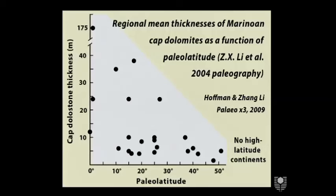The cap dolomite is the part that was actually deposited as the ice was melting — the mixed layer deposit, the shallow water deposit that tracks the sea level as it's rising and flooding the landscape. We're talking about a global sea level rise of up to a kilometer depending on how much ice is actually left at deglaciation. The cap dolomite does actually thicken as a function of paleolatitude — from Lee's paleogeography, the upper envelope of thickness increases towards the equator, as you would expect, not only because the water should be warmer and carbonate saturation should be higher, but also because as the ice retreats from the equator towards the poles, there'll be more time for deposition and you'll see more of the sea level rise at low latitude.